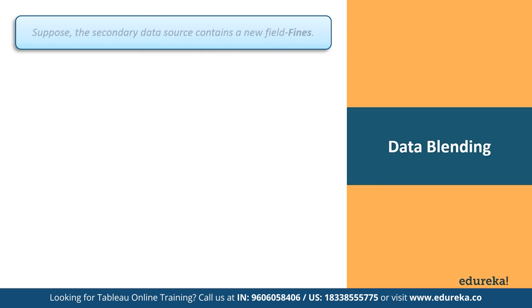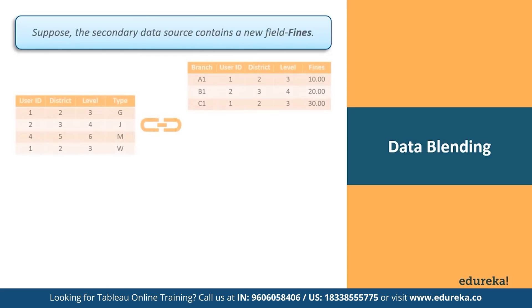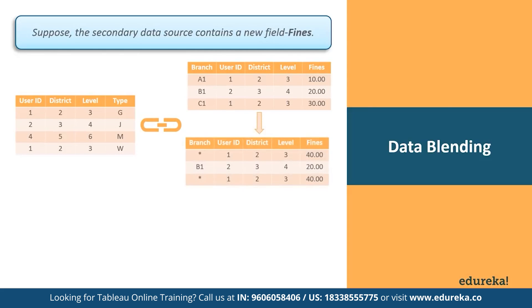Now suppose you have the same tables as before but the secondary data source contains a new field called fines. If the linking fields are User ID, blending your data takes all the data from the left table and supplements it with the data from the right table.